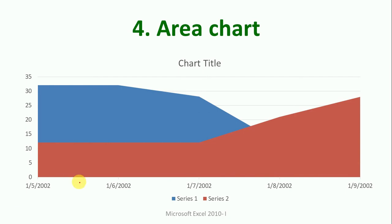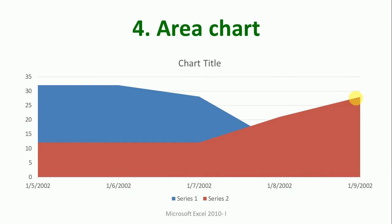In the area chart, the categories and time are represented on the horizontal axis and values are represented vertically. You can see Series 2 increasing from one point, illustrating how we can create and draw these kinds of charts.